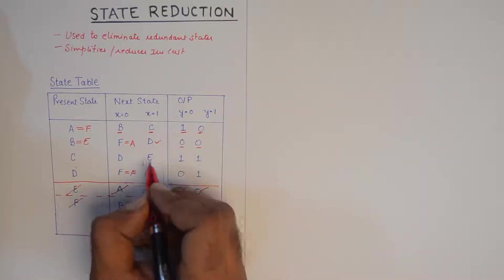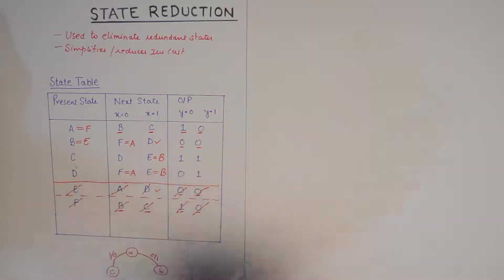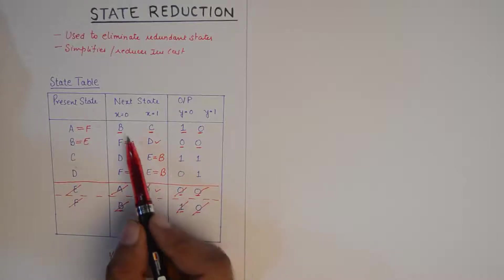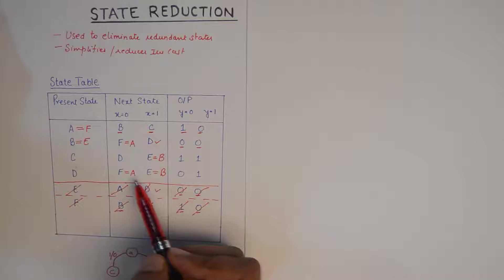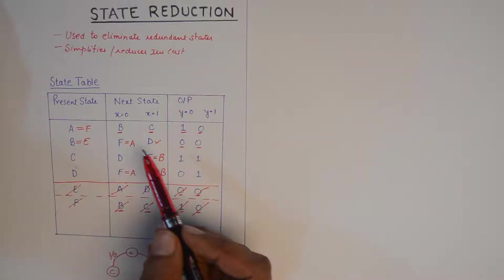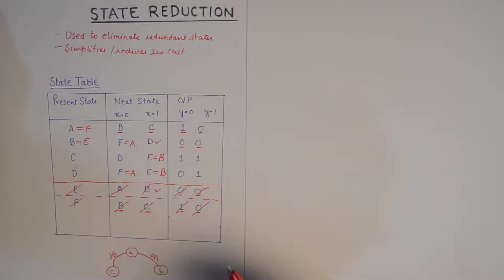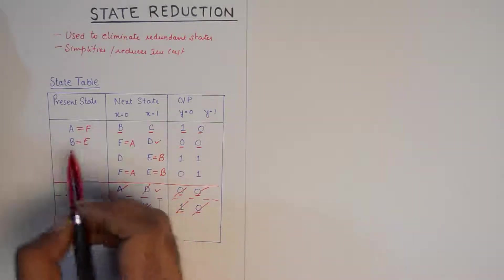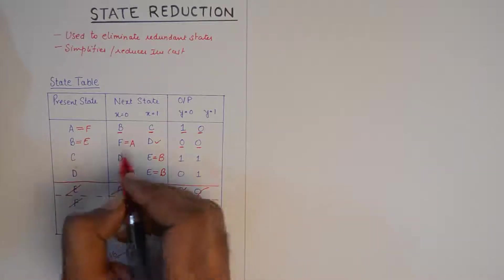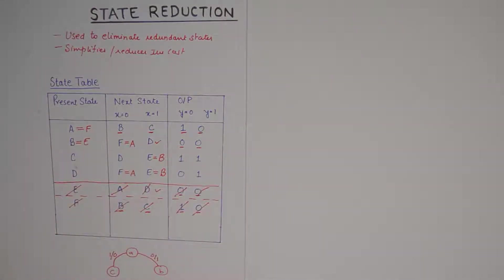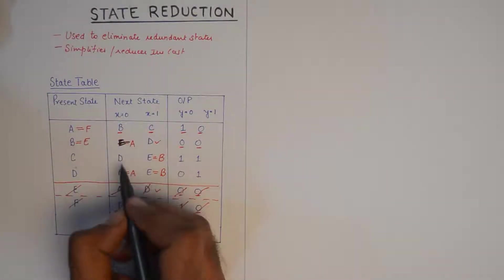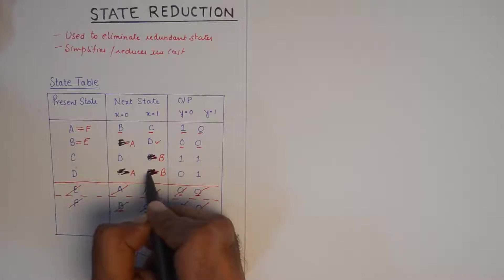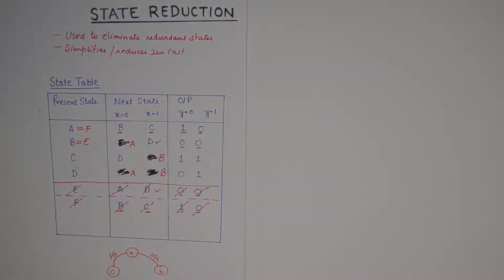Wherever I see E I am going to replace it with B. Checking the remaining next state combinations — B, C; A, D; D, B; A, B — we do not have any more states that match, so no more redundant states are left to be reduced. We have completely reduced our table. The final table eliminates both E and F, and these states will not appear in the state transition diagram.